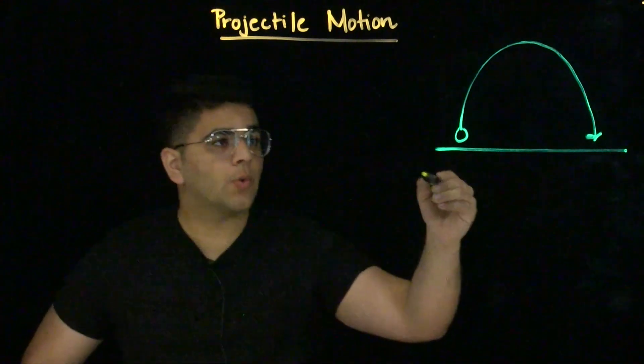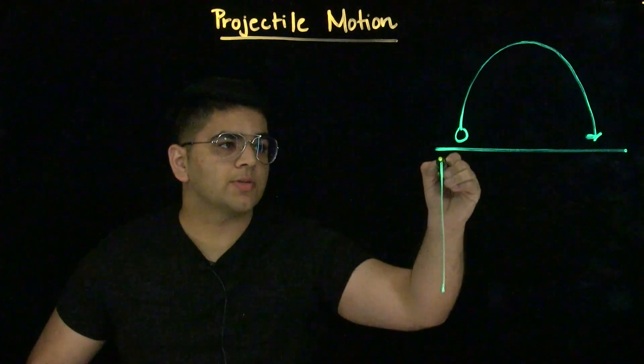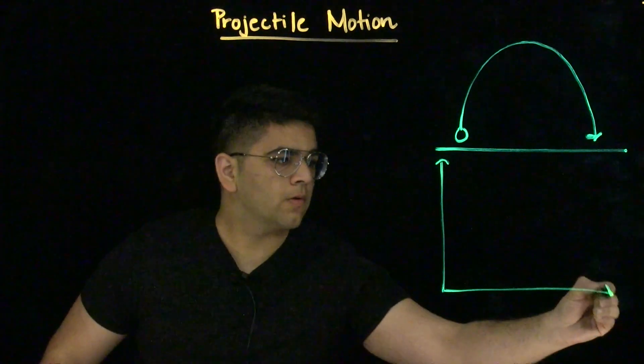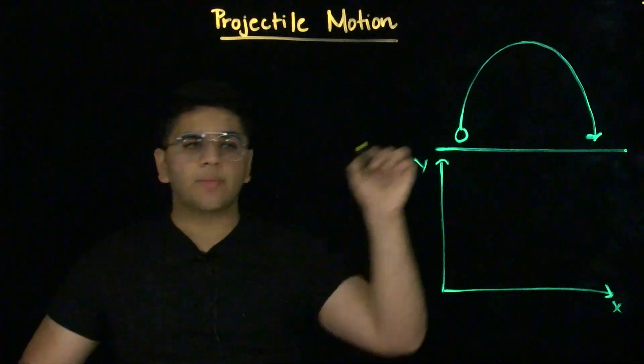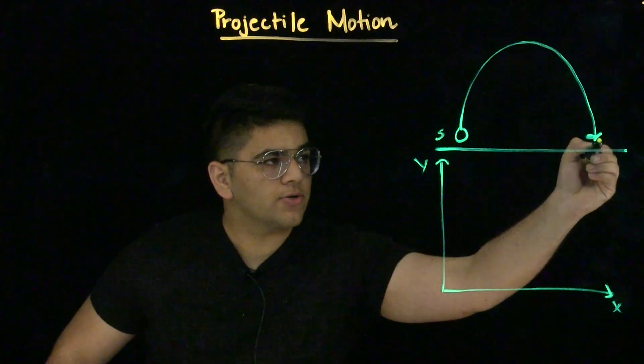Now, let's draw a coordinate axis so we can more clearly see how the motion is proceeding. We see that the projectile starts here and ends its motion here.